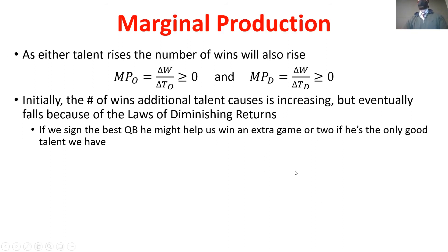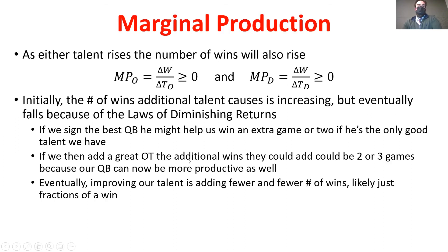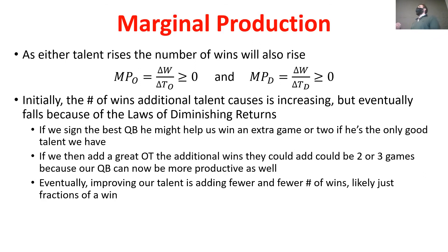We could also see differences in the marginal production of a particular position that depend on what you already have at other positions. In football, the marginal production of a quarterback could be higher or lower — even given the same skill level — depending on the surrounding talent. We'll dive into that further later.